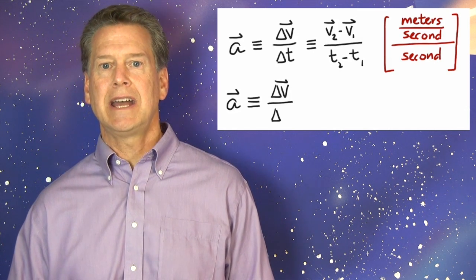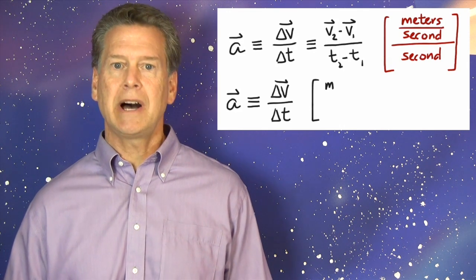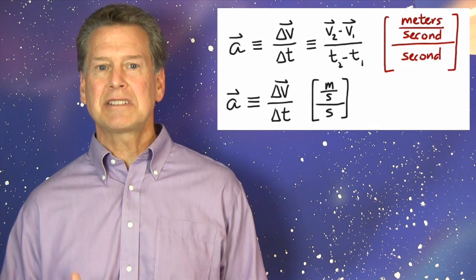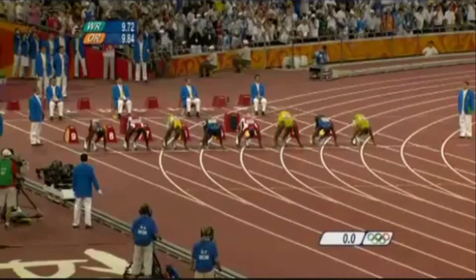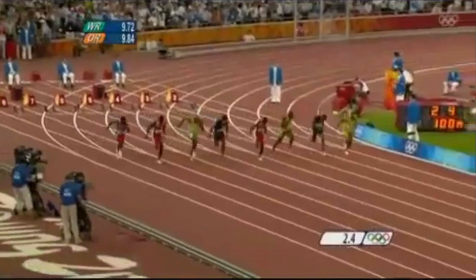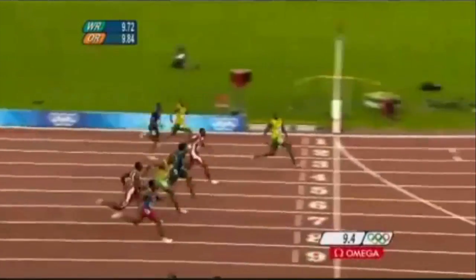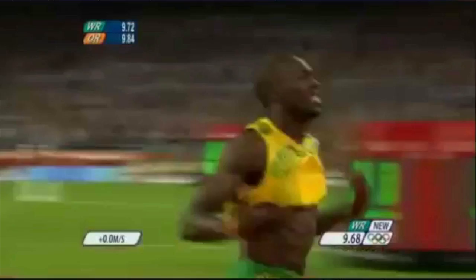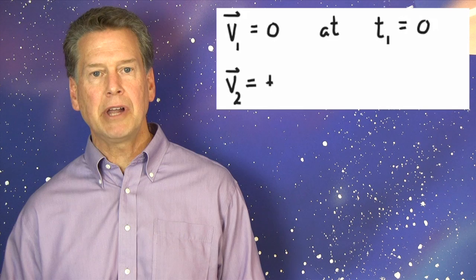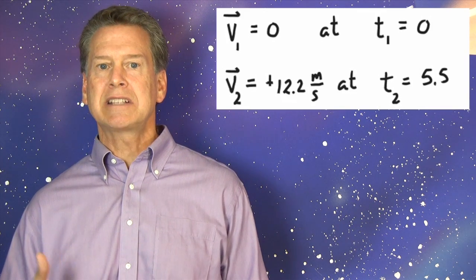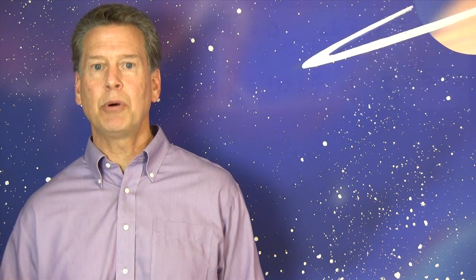Acceleration is defined as delta V vector divided by delta T. Meters per second, per second. Let's do an example to get a good feel for this. As in past episodes, we'll look at Usain Bolt's legendary 100-meter dash at the 2008 Beijing Olympics. Bolt didn't get out of the blocks particularly quickly, but he did have terrific acceleration after that. Careful measurement of his run shows that he reached a maximum velocity of plus 12.2 meters per second after just about 5.5 seconds. Let's use these numbers and units to determine Bolt's acceleration.